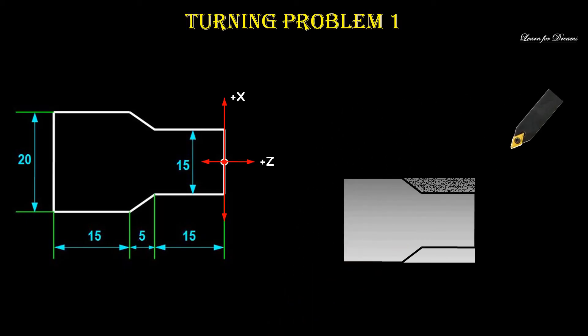We need to remove these parts. So jab turning ka problem mile toh sab se pehle saare points mark karne hai like this, aur uske baad we need to find the coordinates for all the points. Now ab dekhte hai ki tool path kya hoga.